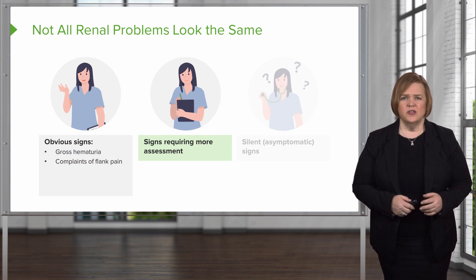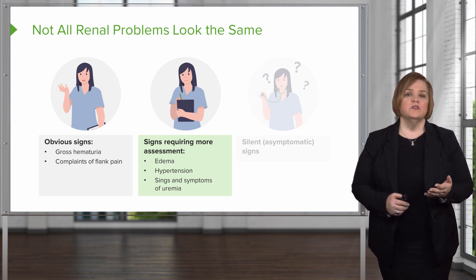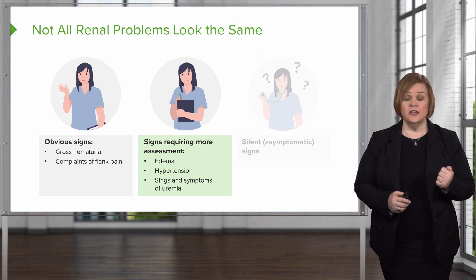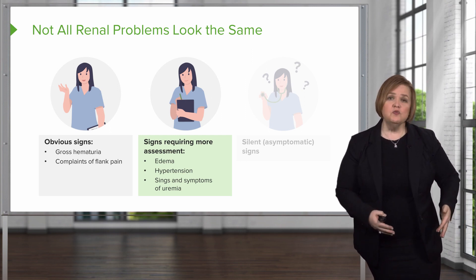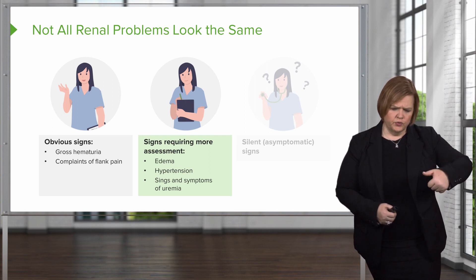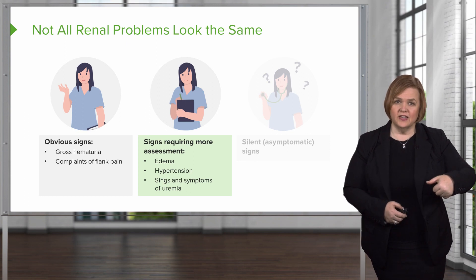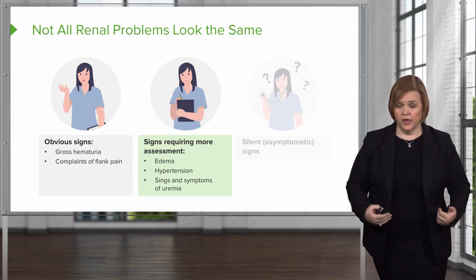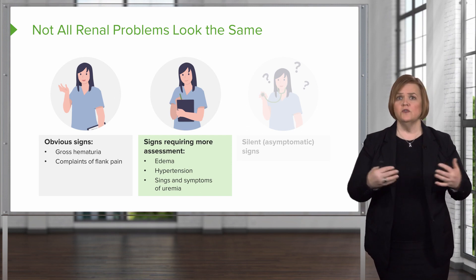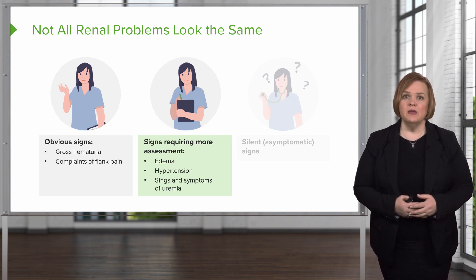The second category requires a little more assessment to figure out if the kidneys are involved. Take edema, for example — edema is fluid in inappropriate spaces. If you've cared for a patient whose legs are swollen, too much fluid has leaked into their tissues. If you push down on their shin bone with your thumb, remove it, and there's still a divot left, that's called pitting edema because it leaves a little pit the exact shape of your thumb. That could be a renal problem, a cardiac problem, or a fluid overload problem — you need to do more assessment. For really sick patients, it may be all of the above.